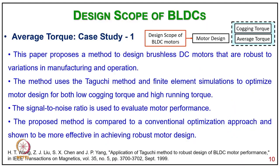Coming to BLDC motors as case study one — average torque. This work presents a method to design BLDC motors that are robust to variations in manufacturing and operation. The method uses the Taguchi method and finite element simulation to optimize the motor design for both low cogging torque and high running torque. Signal-to-noise ratio is used to evaluate motor performance, and the method is compared to a conventional optimization approach to be more effective in achieving robust motor design.